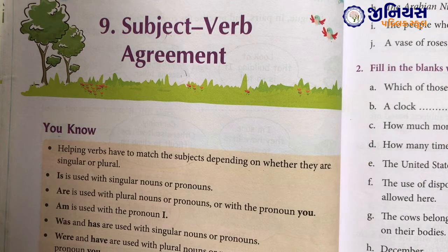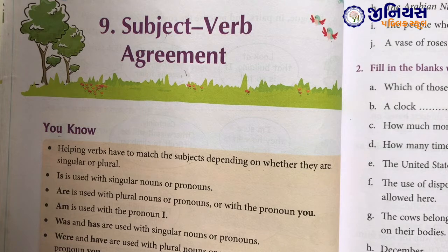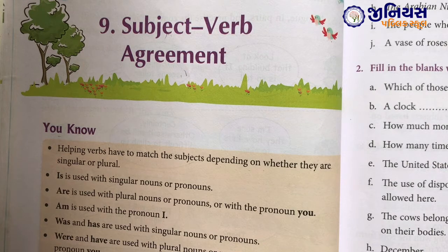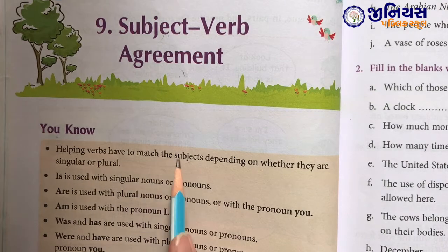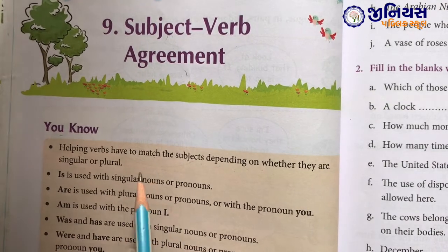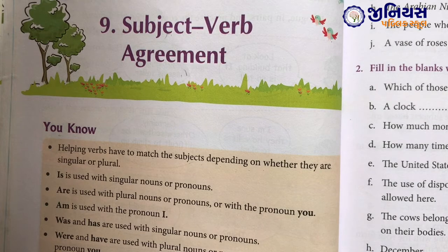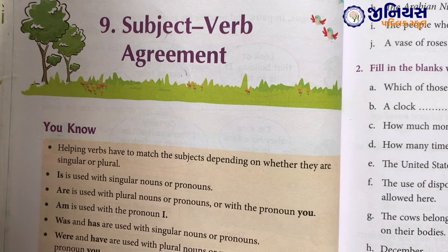Jo helping verb hota hai — am, is, are, was, were, have, has, had — yeh sab helping verb kehte hain. Helping verb subject par dependent rehti hai. Matlab agar subject singular ho toh helping verb singular ka use karenge, aur agar subject plural ho toh plural ka use karenge.